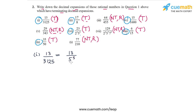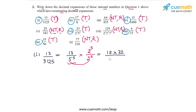If I prime factorize the denominator I will get 13 by 5 to the power 5. The denominator has five 5's in it and there are no 2's. So if I multiply the numerator and the denominator by five 2's, which is 2 to the power 5, then we can make 5 pairs of 2 and 5 in the denominator and convert it into an exact power of 10. In the numerator we get 13 into 2 to the power 5, or 13 into 32, and in the denominator we get 5 to the power 5 into 2 to the power 5, or 10 to the power 5. So 13 times 32 is 416, and 416 by 100,000 is 0.00416. This is the terminating decimal expansion of 13 by 3125.